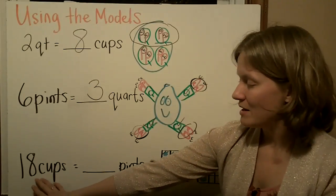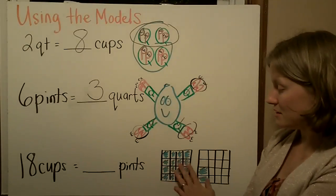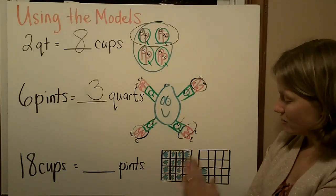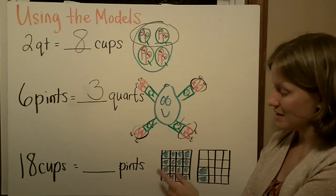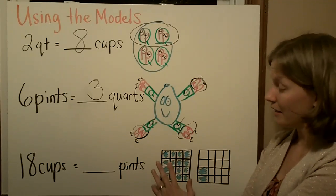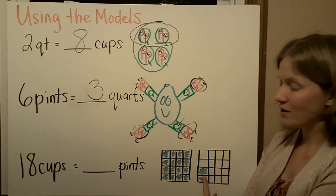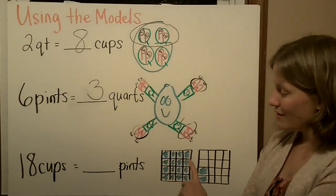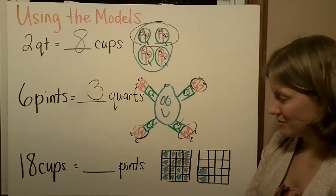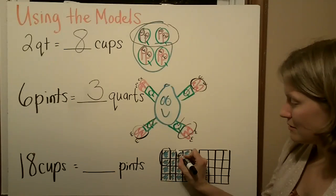If you want to figure out how many pints 18 cups is using the square model, I had to draw two squares. I started with 16 cups, one full gallon, then went into the next gallon and colored in two to make 18 cups. Now I look at how many pints, thinking about the pint being two cups.